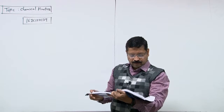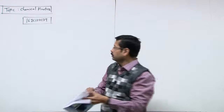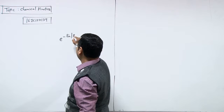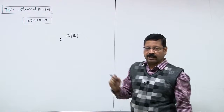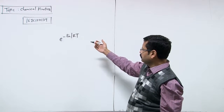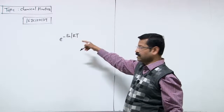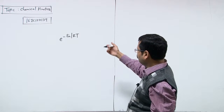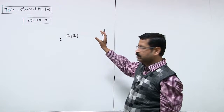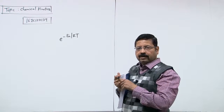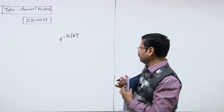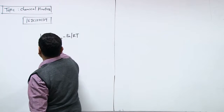In this question, e^(-Ea/RT) represents the fraction of molecules which are possessing the activation energy, or having more than this amount of energy. We keep the activation energy and then the fraction — so out of 1 is 100.